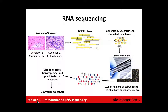The output is hundreds of millions of paired-end reads — a short sequence at each end of each fragment. The data today is 100 bases in from the left and 100 bases in from the right, with some unknown sequence in the middle depending on fragment size. These paired reads are then mapped to a combination of the genome, transcriptome, and predicted exon-exon junctions from known transcript sequences, feeding into a variety of downstream analyses.